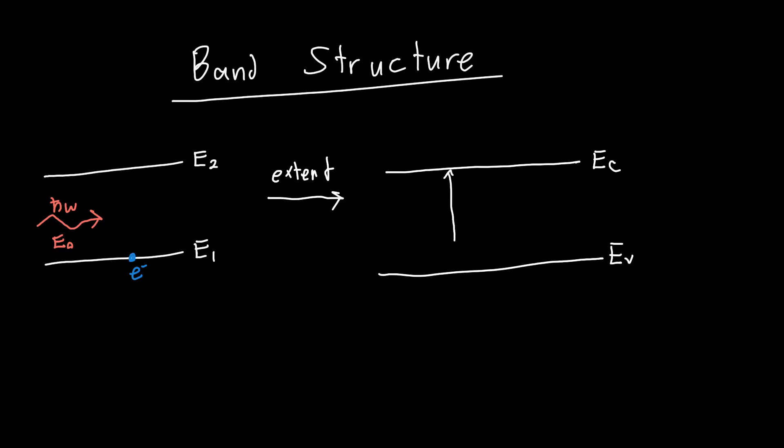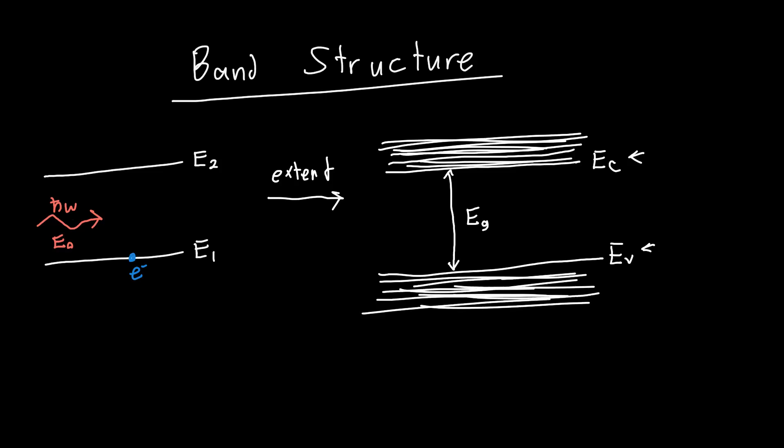So they start at some values Ec and Ev, our conduction band and our valence band, and they're separated by the band gap. We know there's a bunch of states - very closely separated states both in the conduction band and in the valence band. Instead of just two energy levels we've got an essentially infinite number of energy levels. Their density is described by the density of states which we dealt with in intro semiconductor physics.